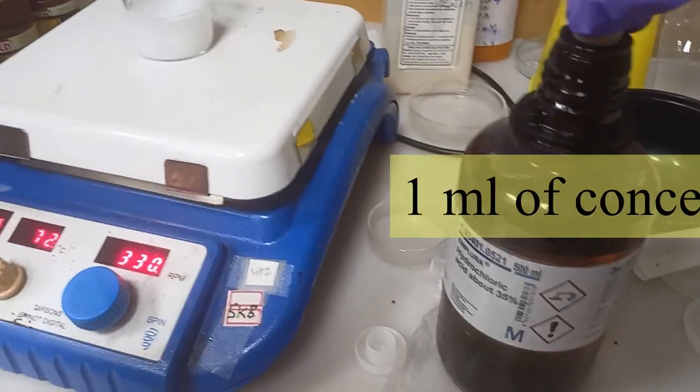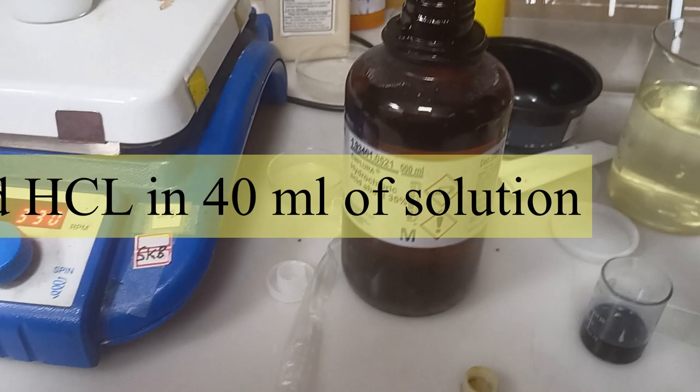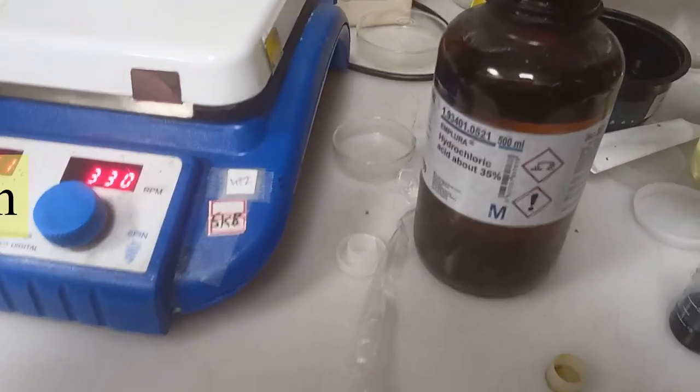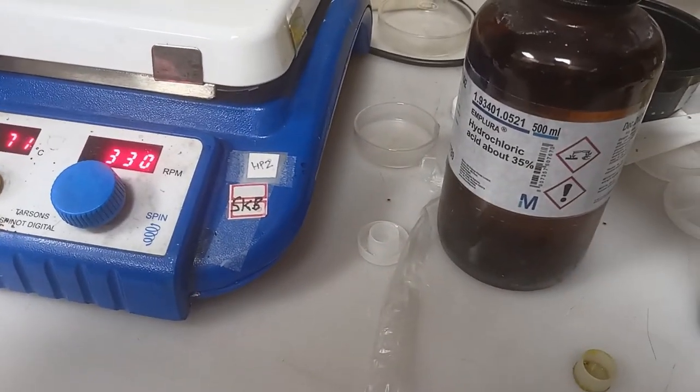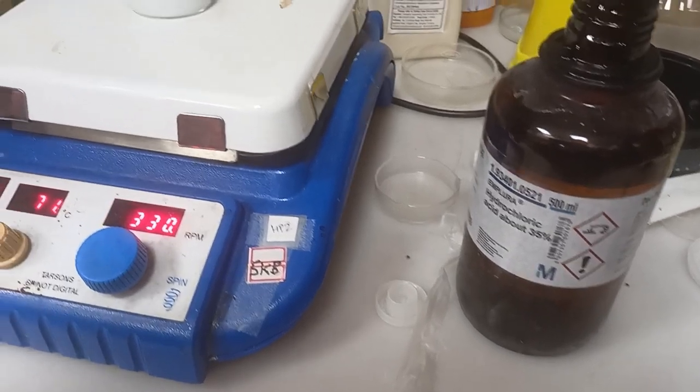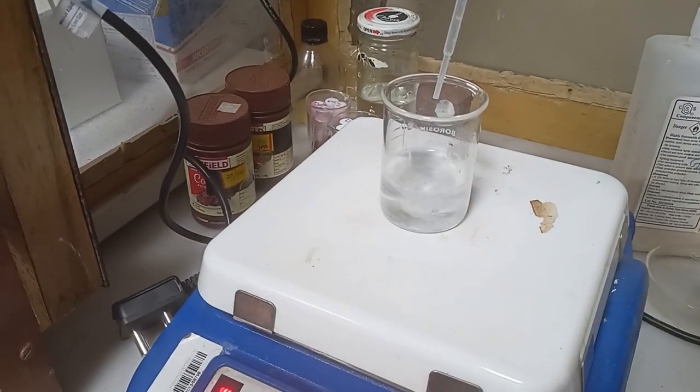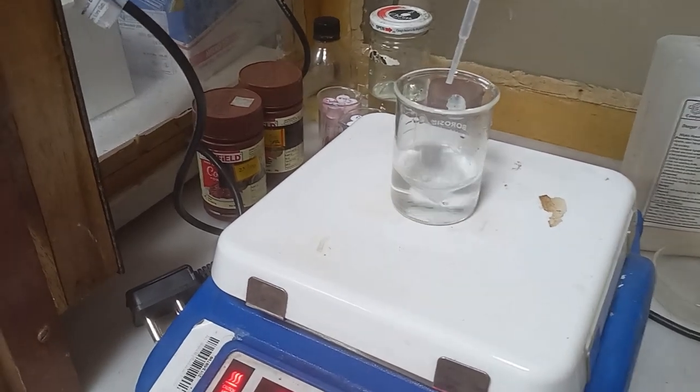Then we need few drops of hydrochloric acid which is highly concentrated, 35%. We will give few drops here and see what happens. As you can see the color suddenly disappeared.